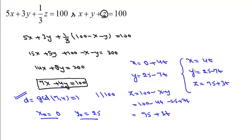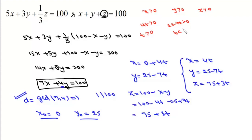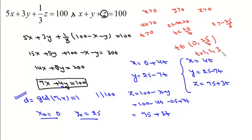Now if we have to find the number of positive integral solutions, we need x > 0, y > 0, z > 0. From x = 4t > 0 we get t > 0. From y = 25 - 7t > 0 we get t < 25/7. From z = 75 + 3t > 0 we get t > -25. So t must lie between 0 and 25/7. Since 25/7 ≈ 3.something, the only positive integer values of t are 1, 2, and 3. So this equation has 3 positive integral solutions.